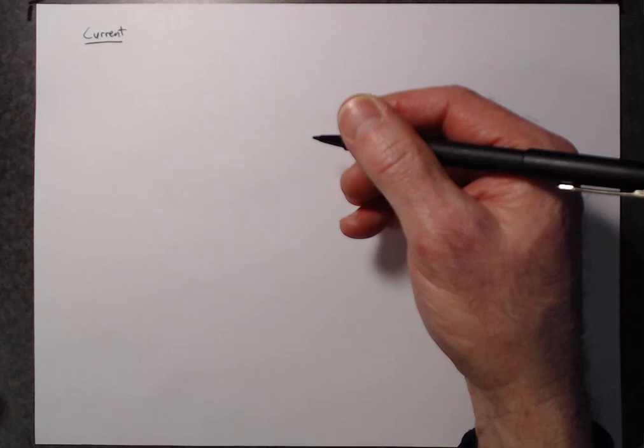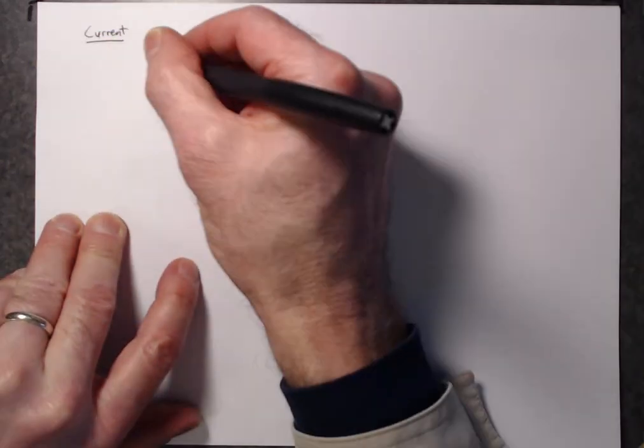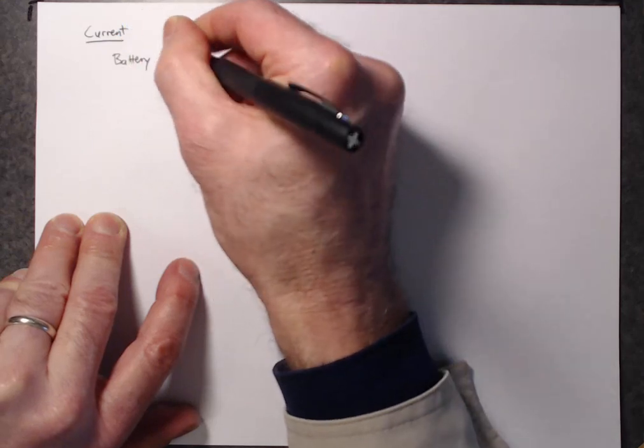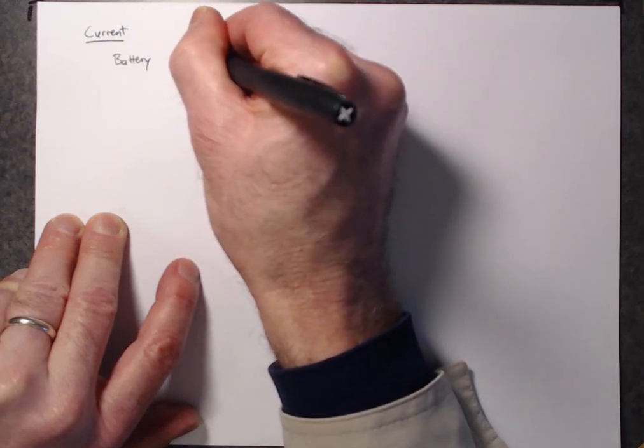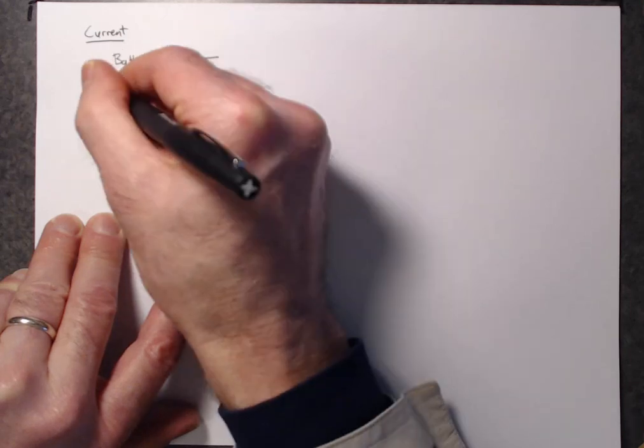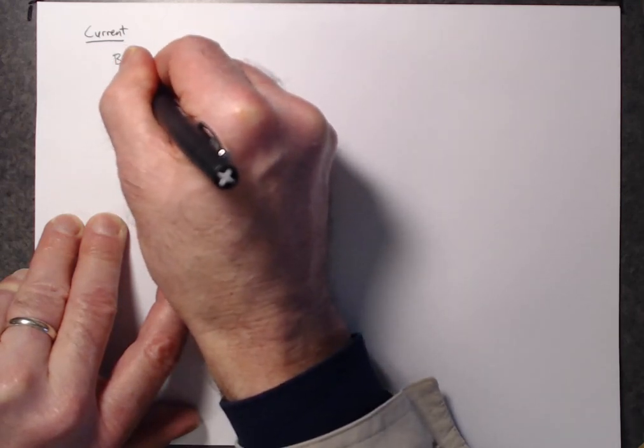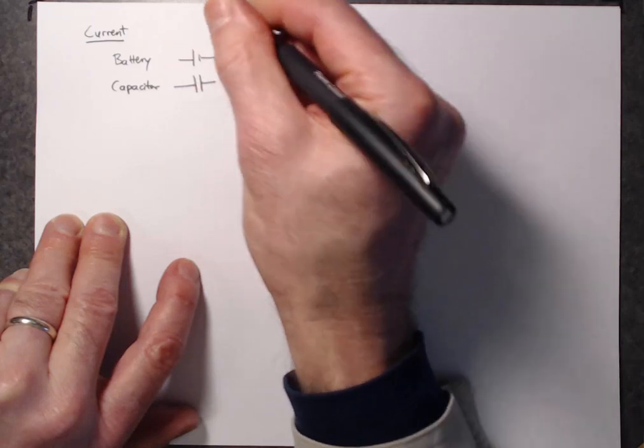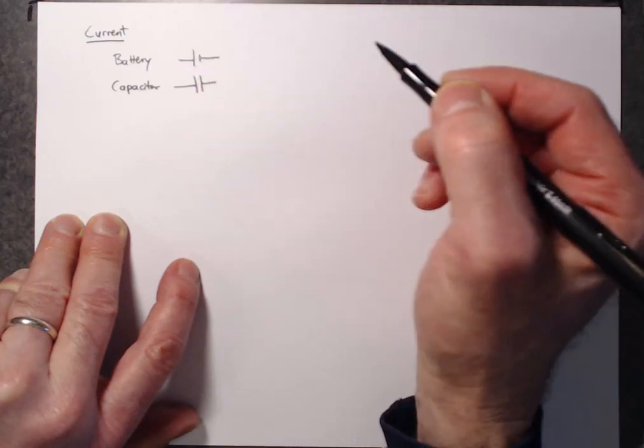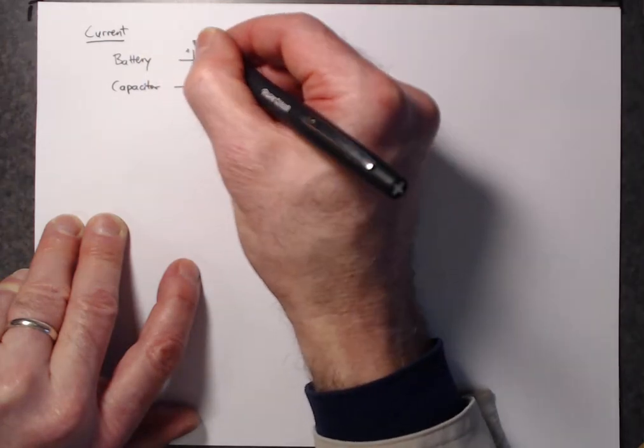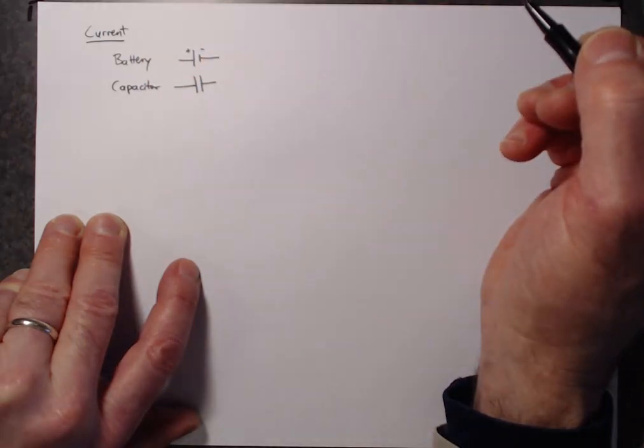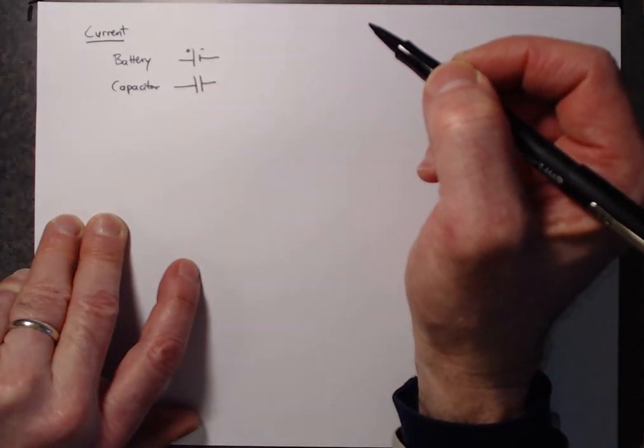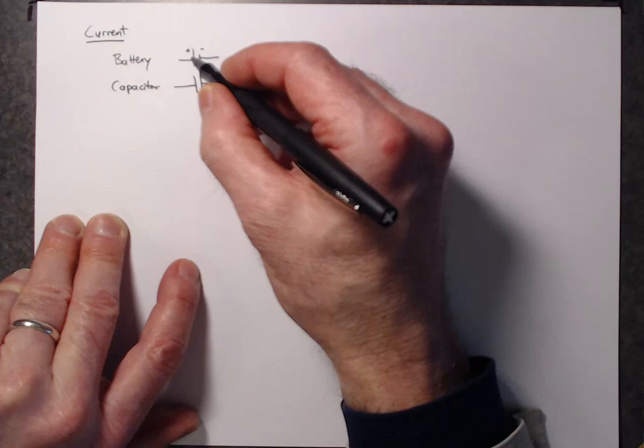So let me introduce first the circuit symbol for a battery, which is like this. It looks a lot like the circuit symbol for a capacitor, which we've seen in a previous lecture. That looks like this. The battery looks similar, but the two bars are of differing lengths. The longer bar is the positive terminal of the battery. The shorter bar is the negative terminal. But usually we don't indicate those signs. We just show the two bars.